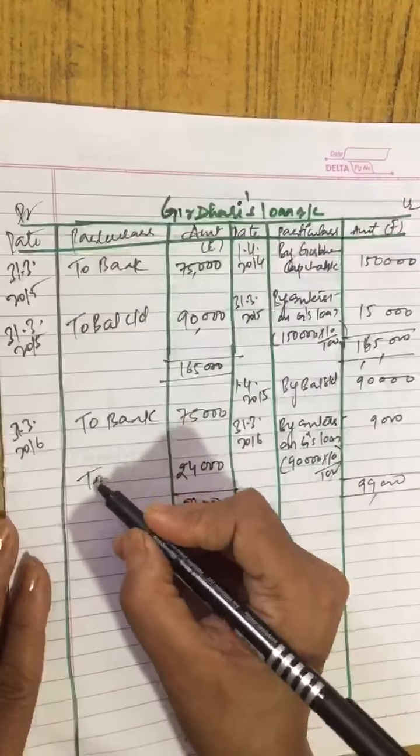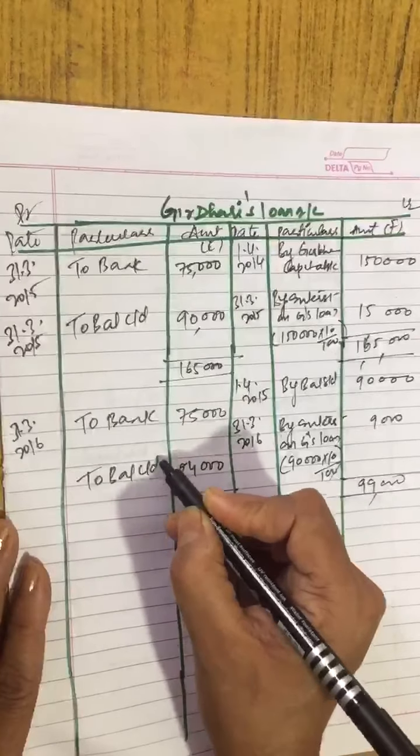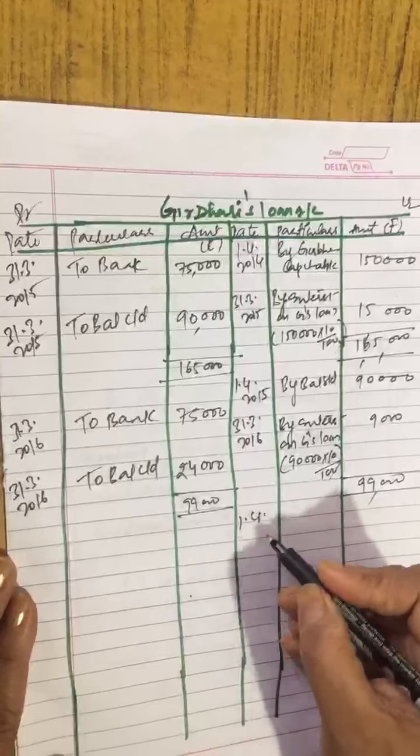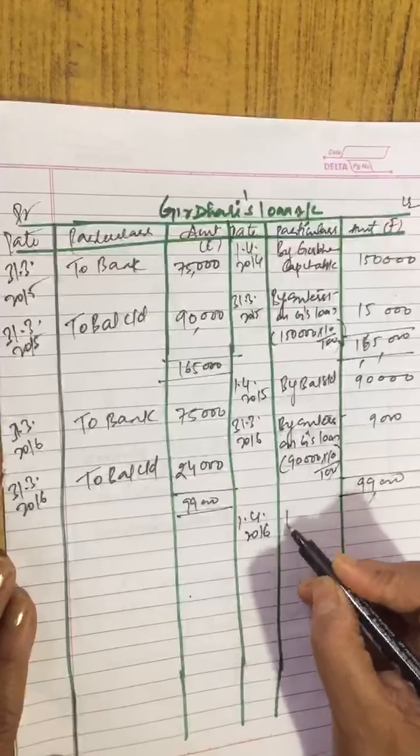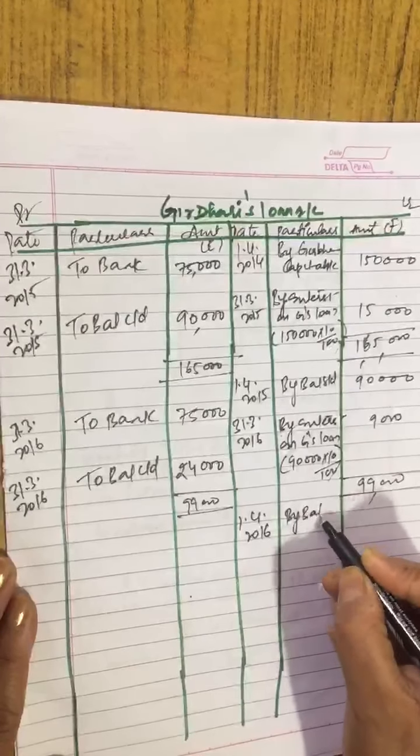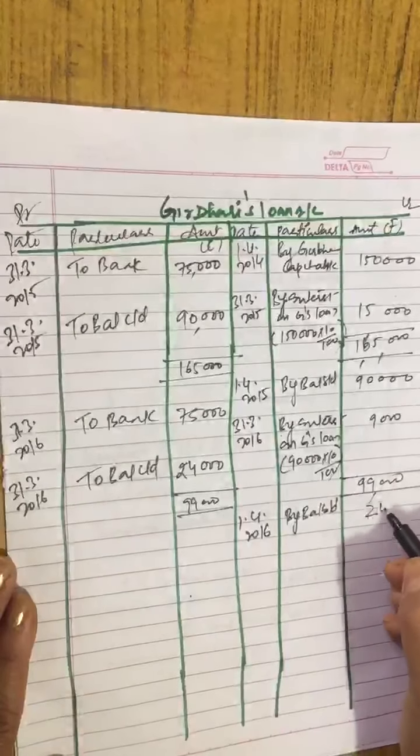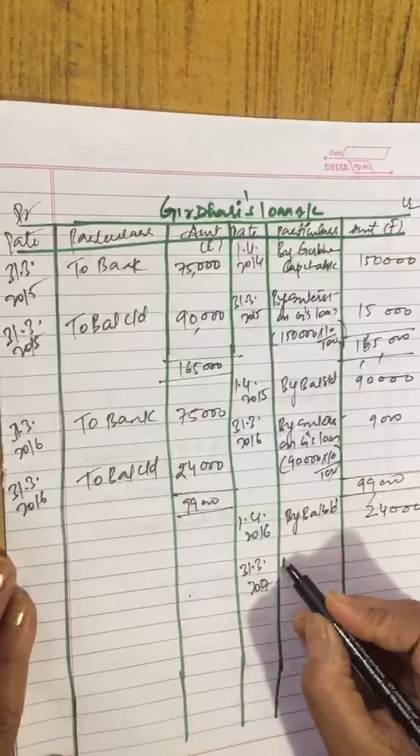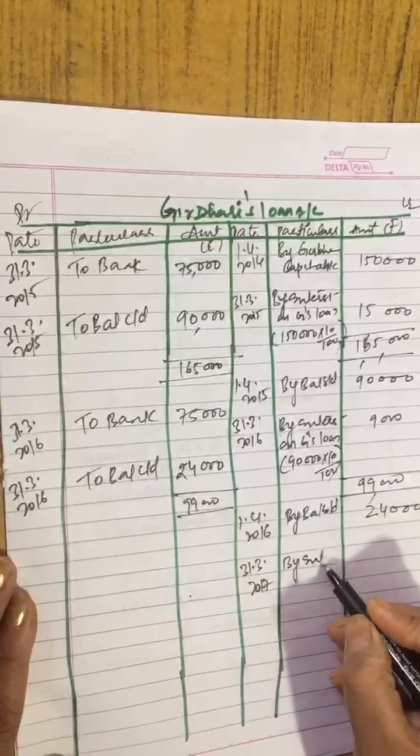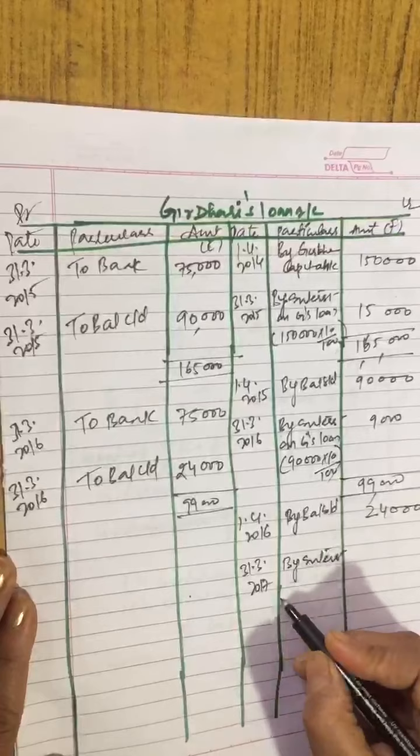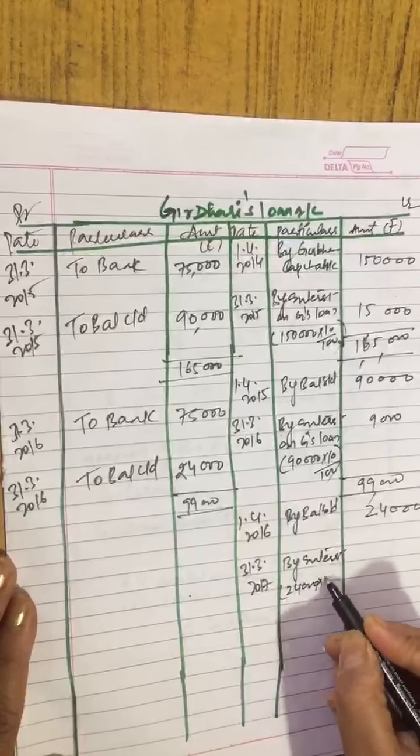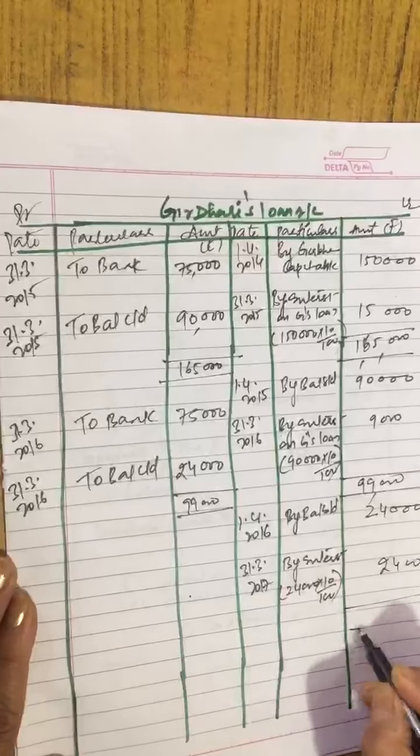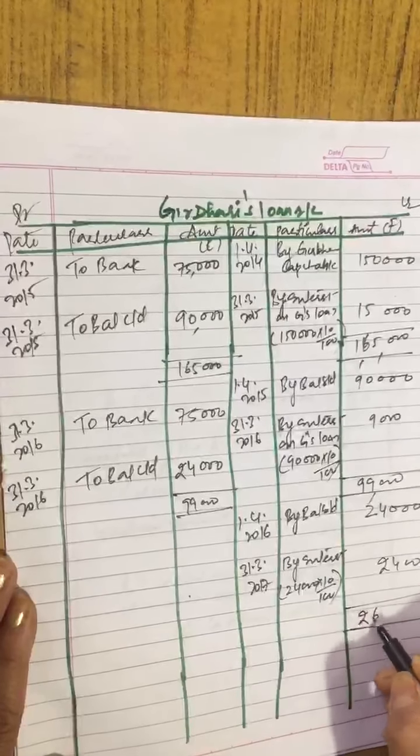So if you see the balance, our balance is 99,000. 99 minus 75 gives balance 24,000. So balance carried down on 31st March 2016. Now you bring it down: 1st April 2016 balance brought down 24,000. Then 31st March 2017, by interest you will calculate 24,000 ka 10%, which is 2,400. So this total becomes 26,400.